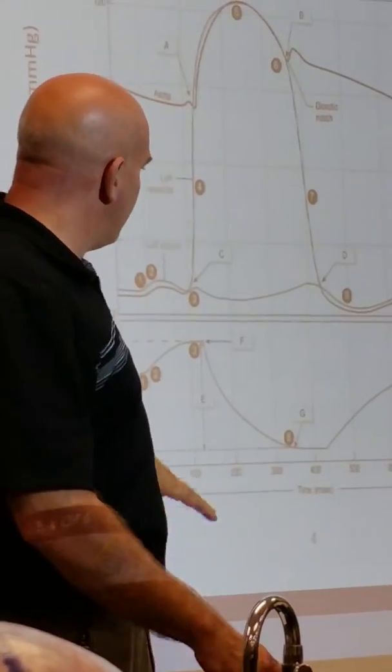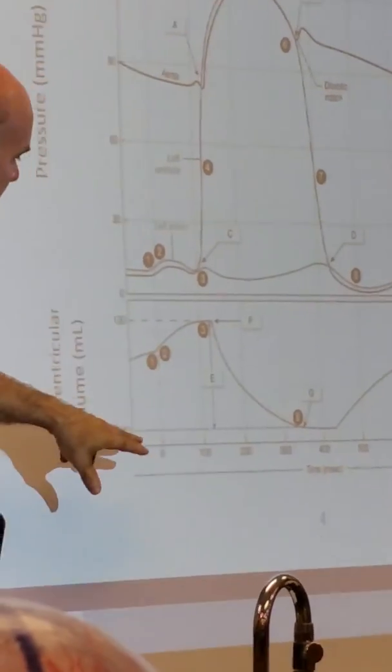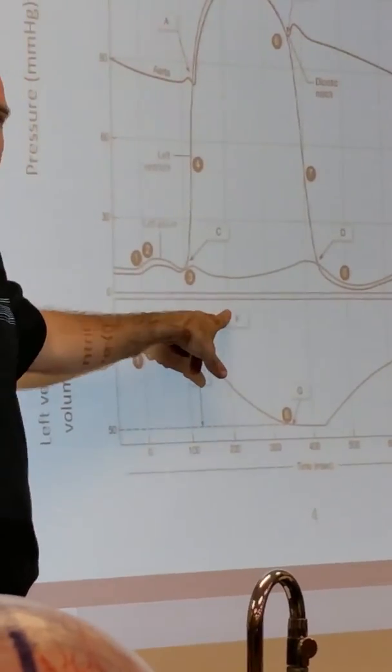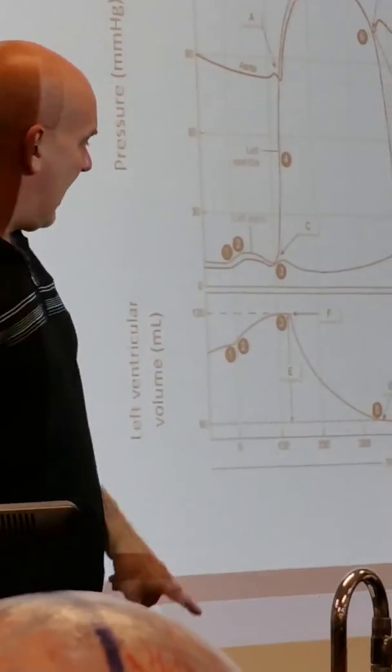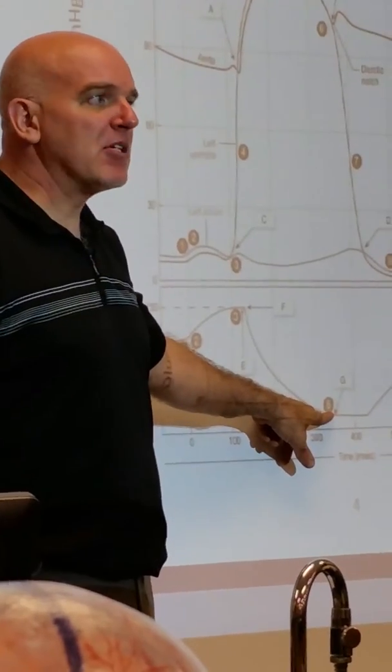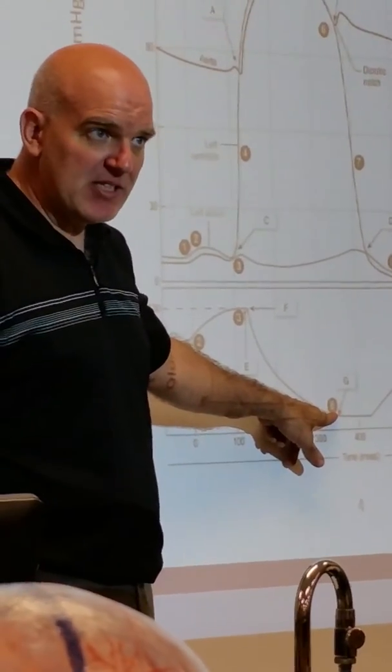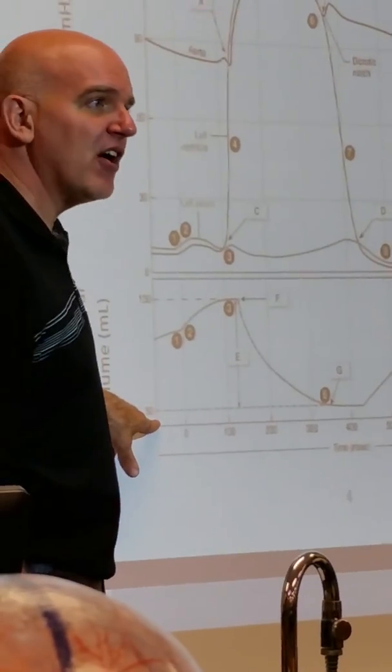Down here I have my end diastolic volume, which is F—that's how much blood is in your heart before it beats. I have my end systolic volume G—that's how much blood is in your heart after it beats. Now is it all the blood in the heart? Nope, there's 50 ml still left in the heart.